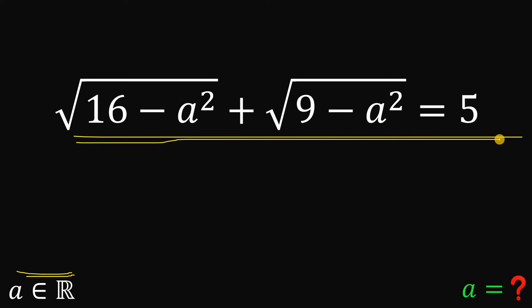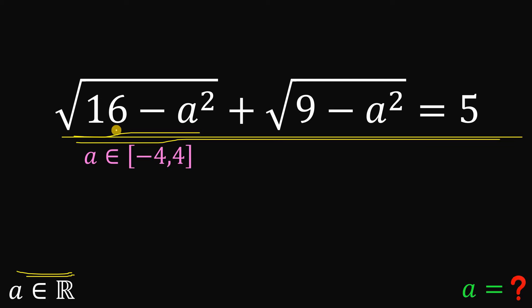Before we get to the solution, the first thing we need to do is to get the possible values of A. In this term, square root of 16 minus A squared, A must be from negative 4 to positive 4, because if A is positive 5, then 16 minus A squared is a negative number, and we don't want a negative number inside the radical sign.